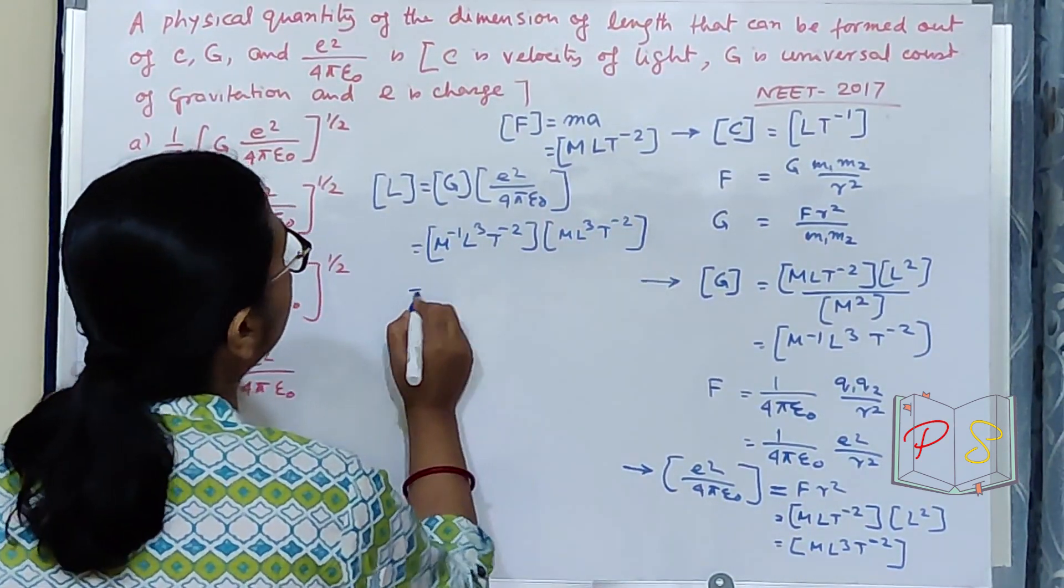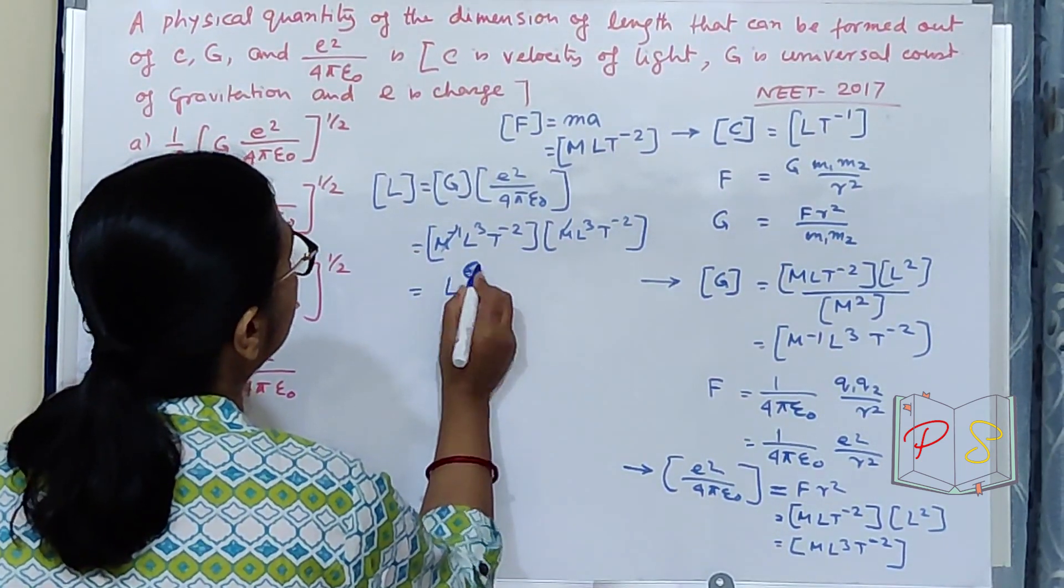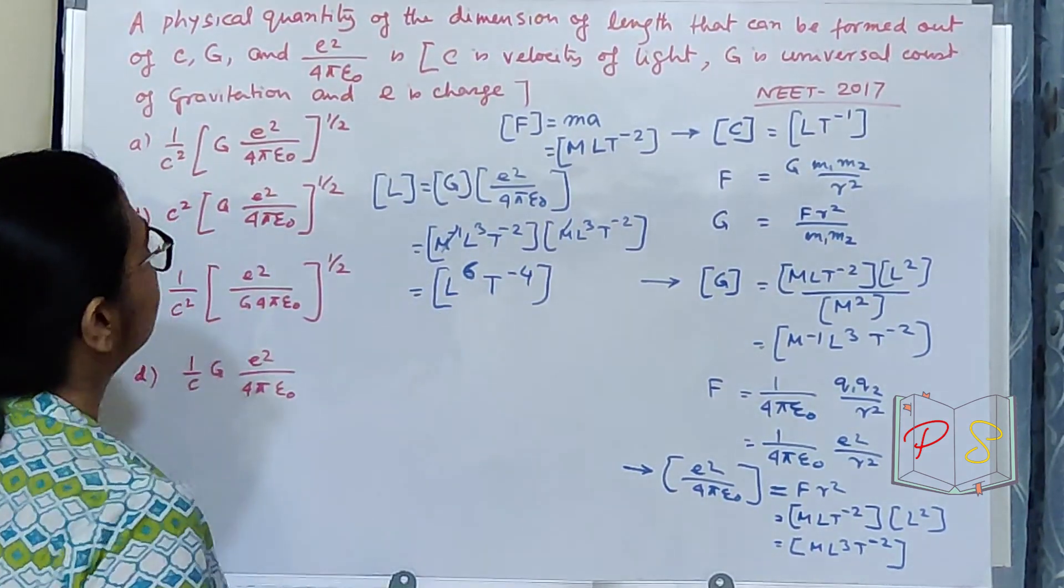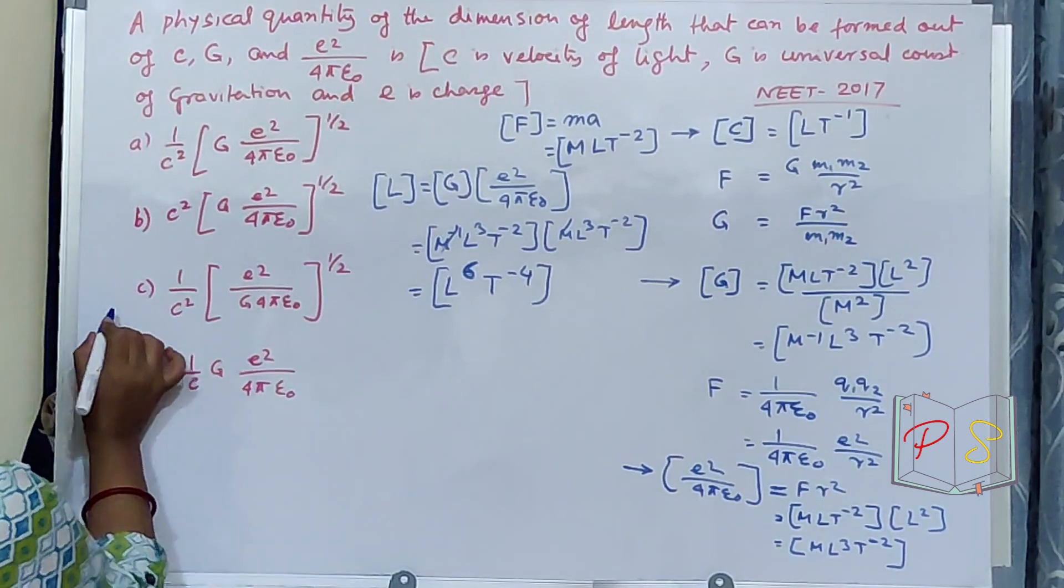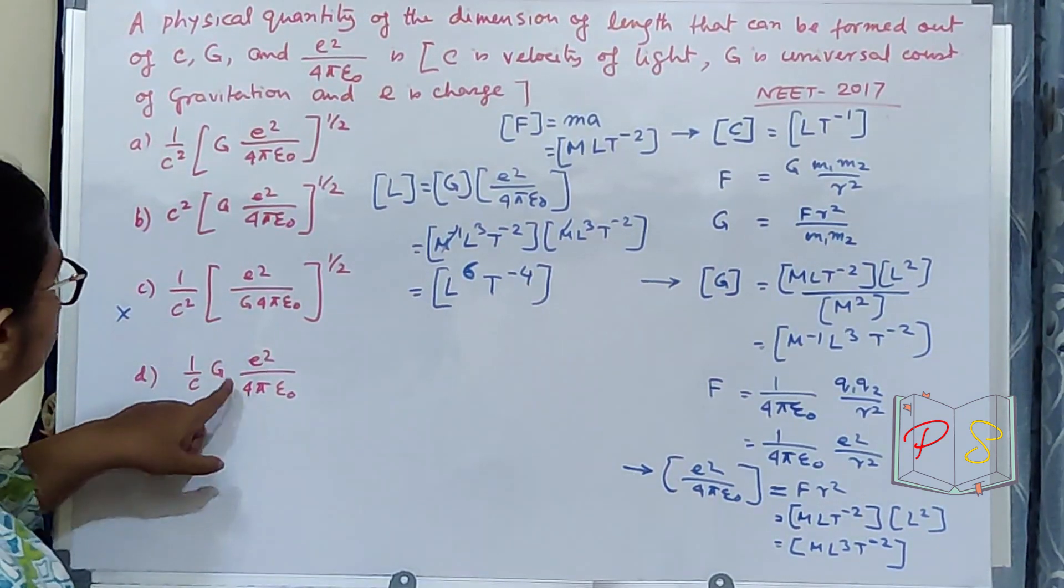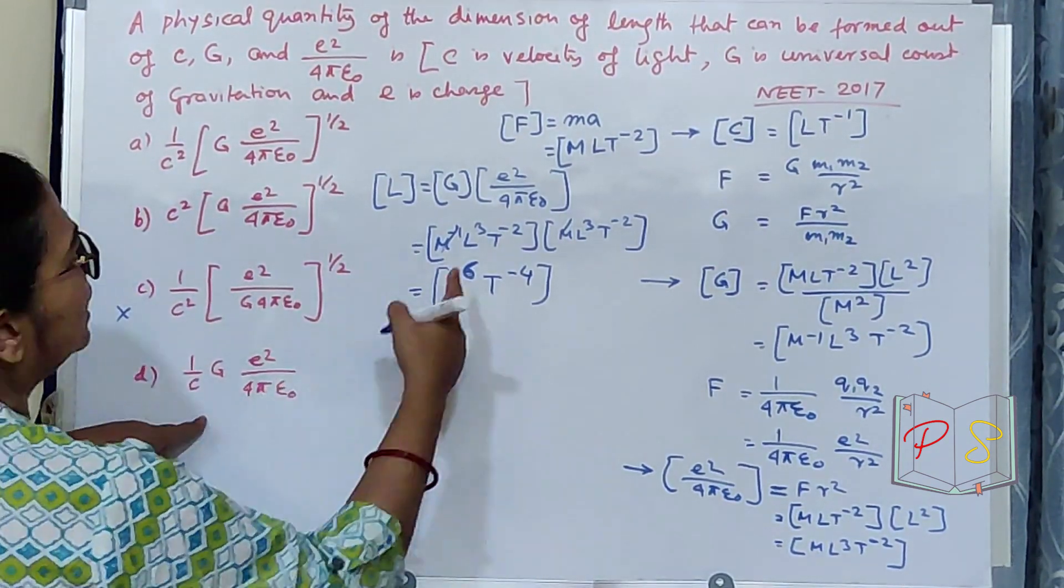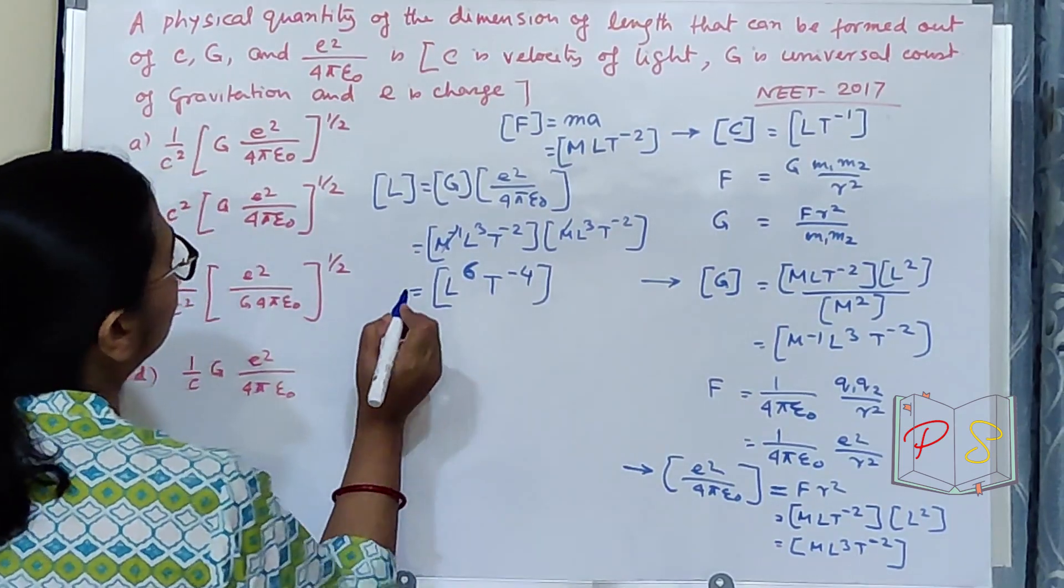M minus 1 L 3 T minus 2 into M L cube T minus 2. If I do this, M will go. I am having L 6 T minus 4. This is definitely not my option. If I square root it, then I will be closer to L.